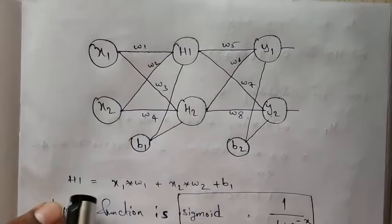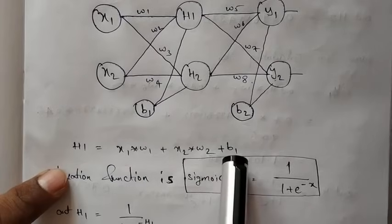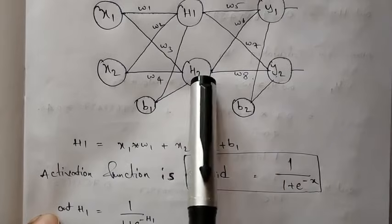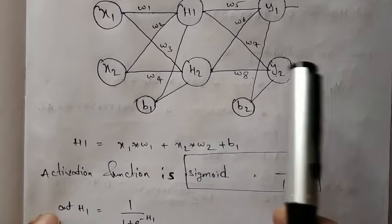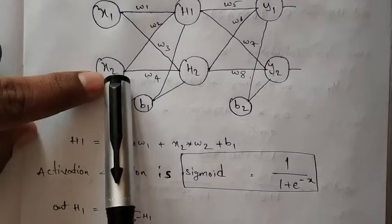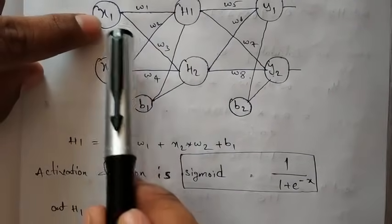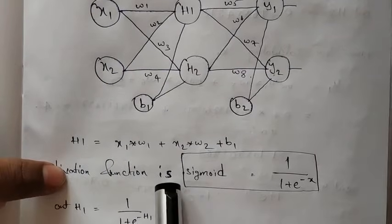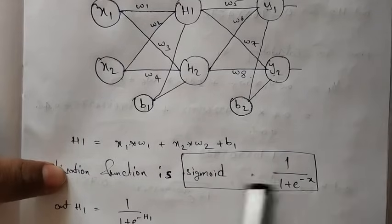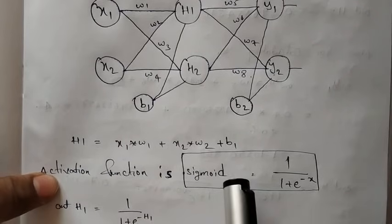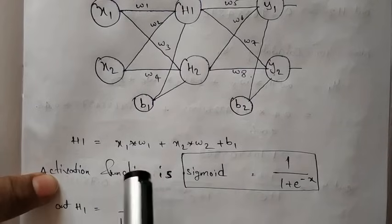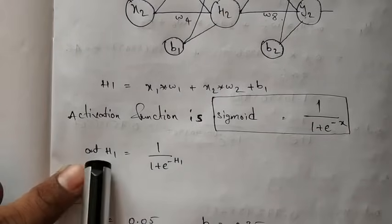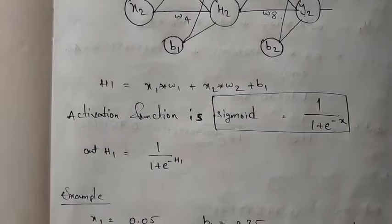We calculate the output at the hidden layer using: h1 = x1·w1 + x2·w2 + b. This is the formula. We then apply an activation function to get the output at the hidden layer or at the output layer, at every node in the network. One of the activation functions is sigmoid: 1 / (1 + e^(-z)). If you want to know more about activation functions, there is another video you can check out. After applying this activation function on h1, we get: output of h1 = 1 / (1 + e^(-h1)).